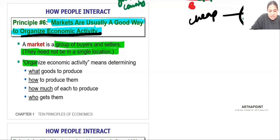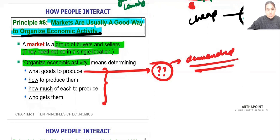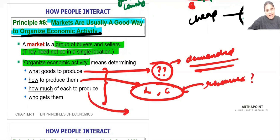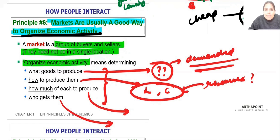Organizing economic activity addresses four questions: What goods to produce? This depends on which goods are most demanded. How to produce them? This depends on what resources — labor or capital — are available. How much of each to produce? Depending on the population and what they demand. And who gets them? For example, producing weapons for national defense and food for the general population.